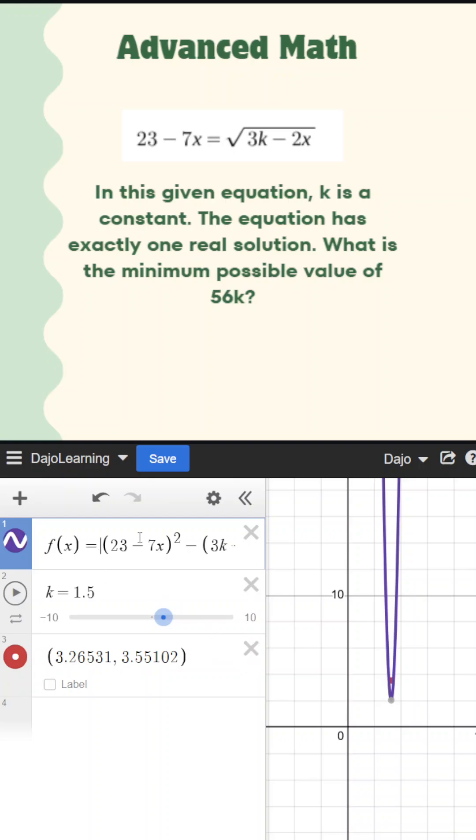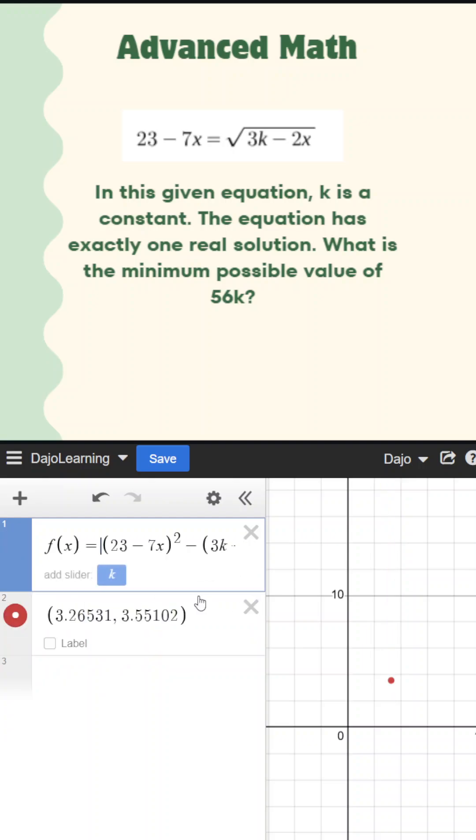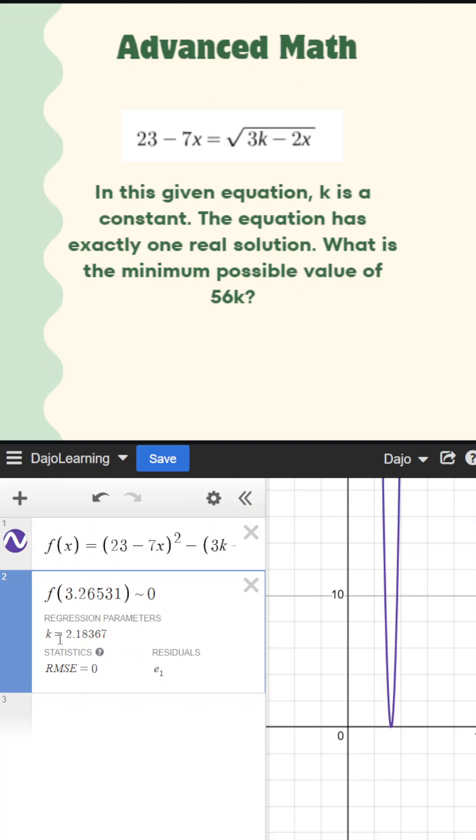So what we could do is we could define our function as f of x. And we could take the x value of the vertex that we found, and we could plug it into the equation. And since we know our y value has to be zero, because it's one real solution, we could actually find k.